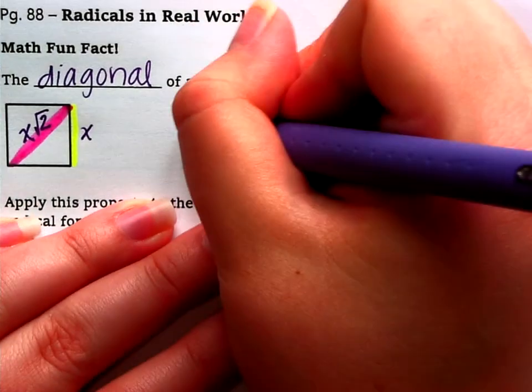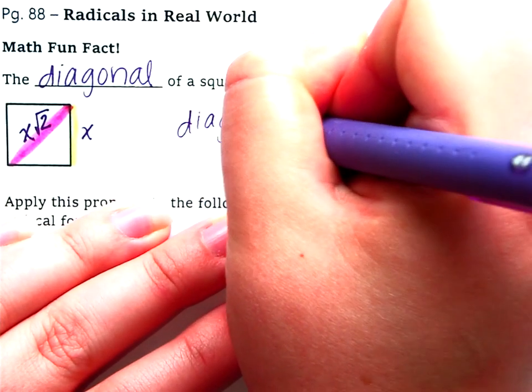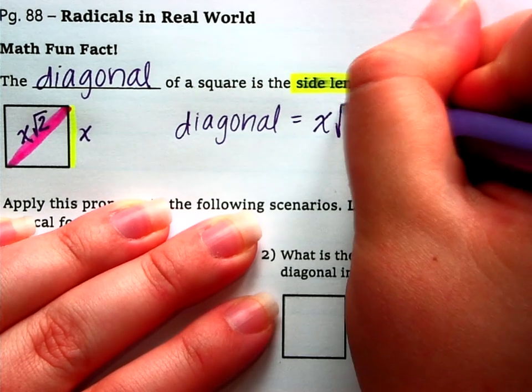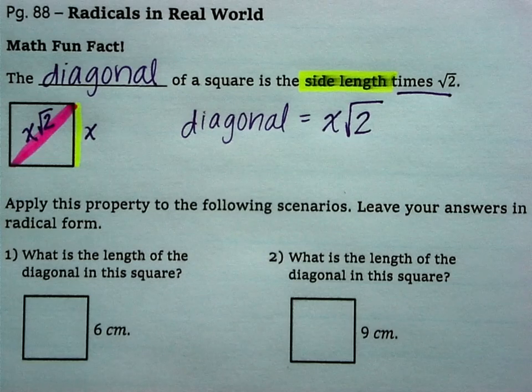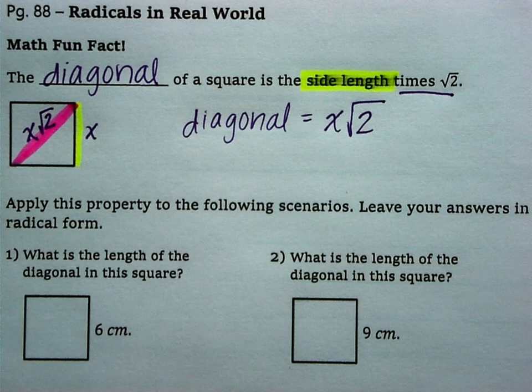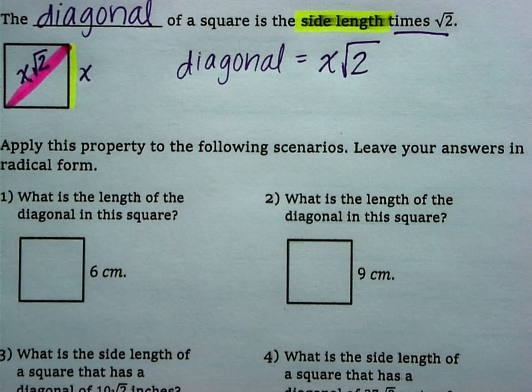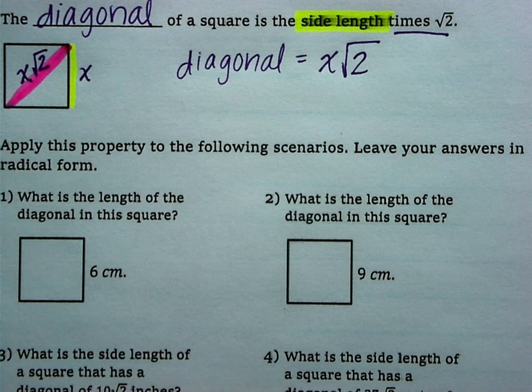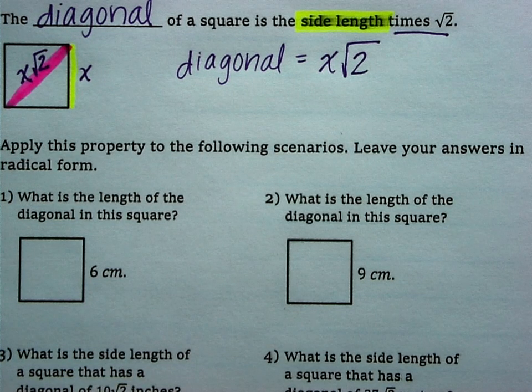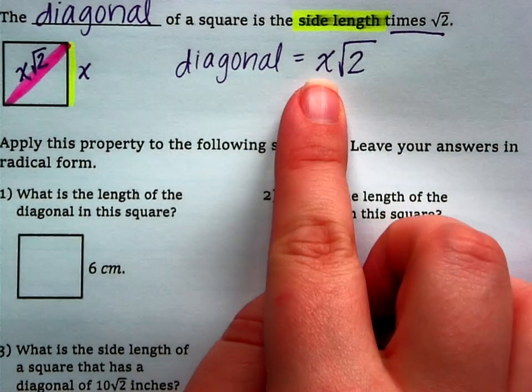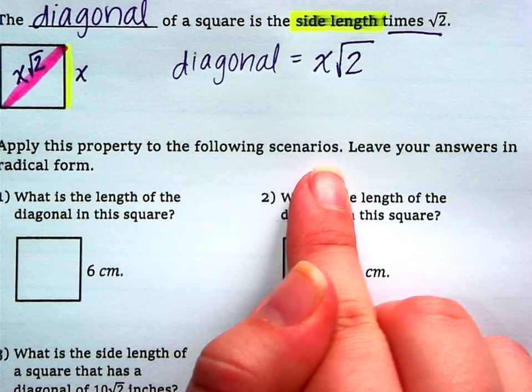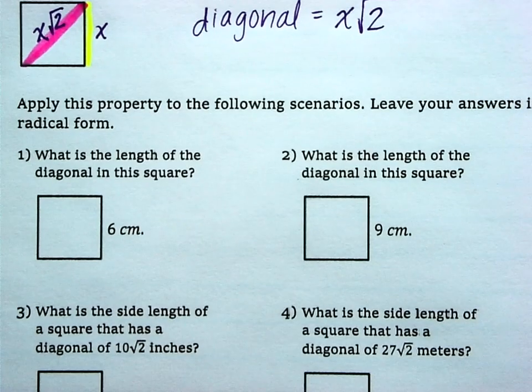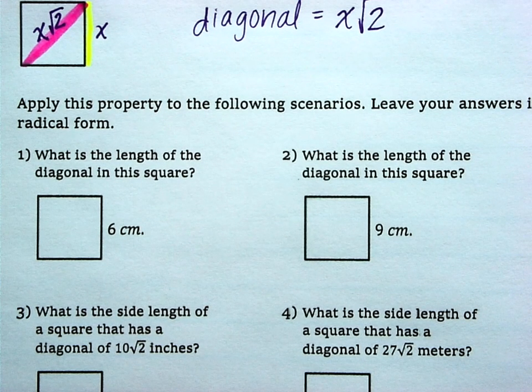So, the diagonal equals X, the side length, times Radical 2 at the end. So, the format here is the odds are very similar to the evens. I will do the odds. That will help you complete the evens. So, apply this property, diagonal equals the side times Radical 2, to the following scenarios. Leave your answers in Radical form. We don't want any decimals. Leave it as a Radical.